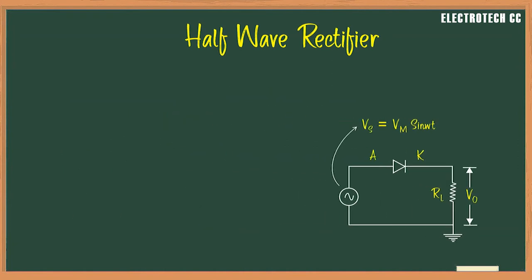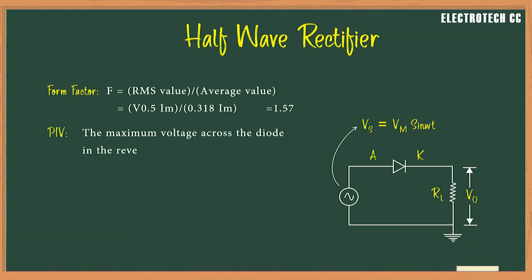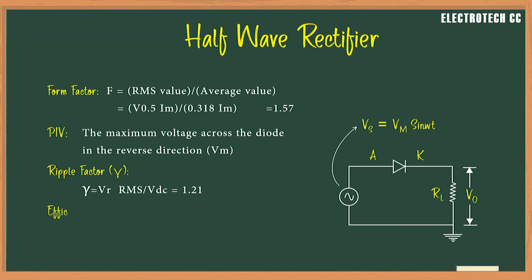The form factor is the ratio of the RMS value to the average value of output power, and is equal to 1.57 for the half wave rectifier. The peak inverse voltage (PIV) for the half wave rectifier is the maximum voltage across the diode in the reverse direction, which is equal to Vm. The ripple factor equals Vr(rms)/Vdc and is equal to 1.21. The efficiency, which is the ratio of output power to input power, is equal to 40.6% for the half wave rectifier.